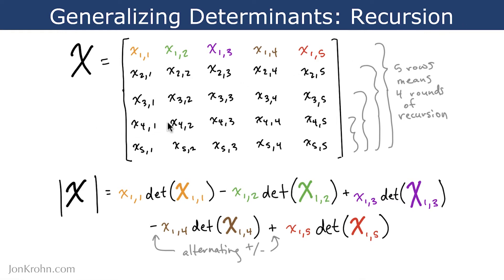What we'll do, I'll speak about it at a high level first, and then we'll dig into some numbers on the next slide. So in order to find the determinant for a 5x5 matrix, you would need to perform four rounds of recursion.